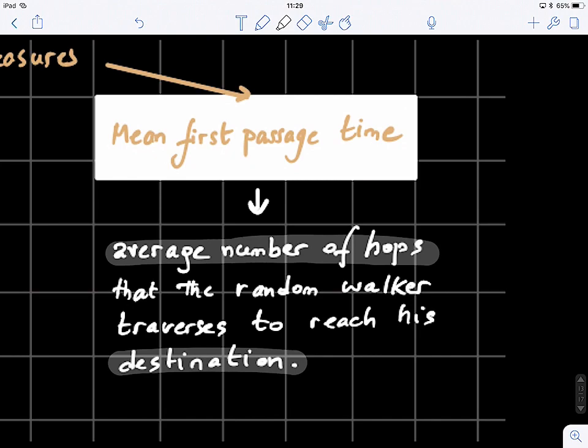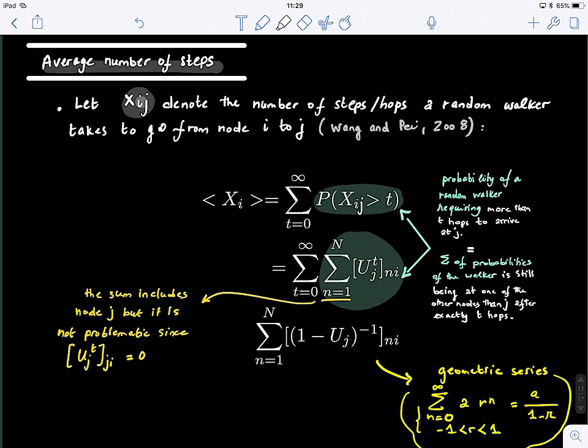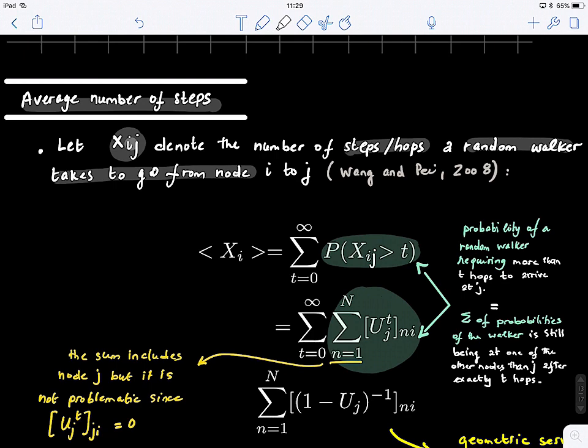So how we define this, let X_ij denote the number of steps or hops a random walker needs to take to go from node i to node j. And this was introduced in the paper by Wong and Pei in 2008.